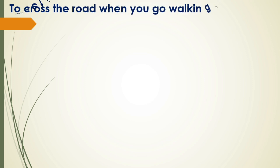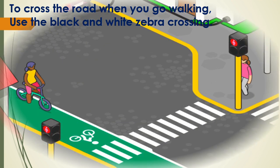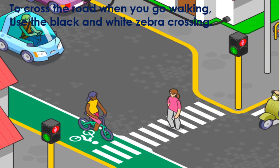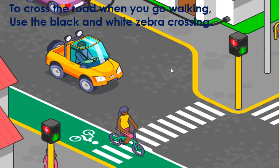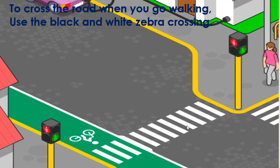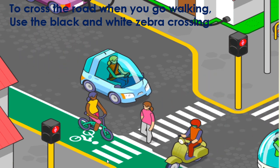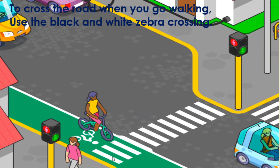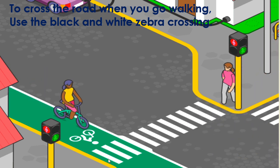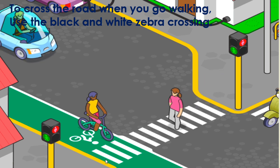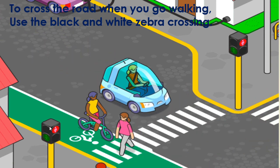To cross the road when you go walking, use the black and white zebra crossing. If you want to move from one side of the road to the other, you have to use this black and white zebra crossing. This is called zebra crossing because the zebra — that animal — has black and white stripes on its body. We have to use this zebra crossing while crossing the road.